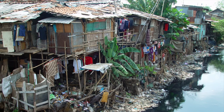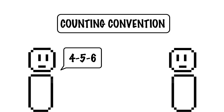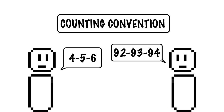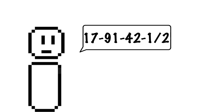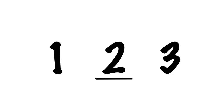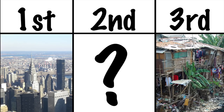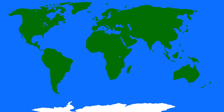First world countries and third world countries. For those of you with moderate to extremely good counting skills, and maybe even those below average, you may have noticed that it goes from 1 to 3, and there's one number missing. Are there second world countries? And more importantly, why are digits assigned to different areas of the world?